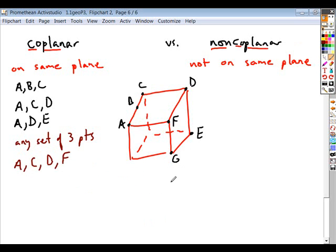And what if I did the points A, C, D, and E? Would that be a set of coplanar points? Again, if you take any three points, A, C, and D represent this top plane. Is point E located on that plane? No. So here would be a case of non-coplanar points.